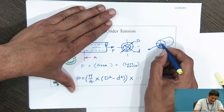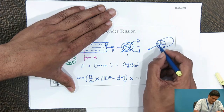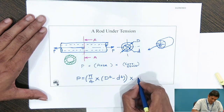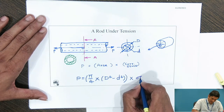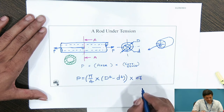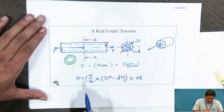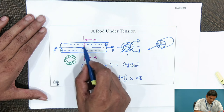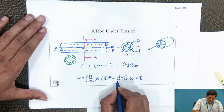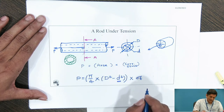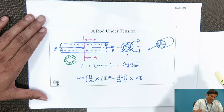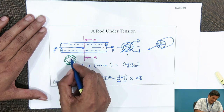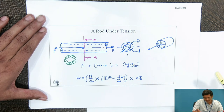The force is perpendicular to the area and therefore the stress must be sigma t. If the area is reduced — if there is no material inside — I need to reduce that from the outer area. Outer area is pi/4 × D² and inside area is pi/4 × d².